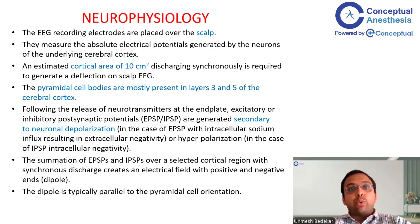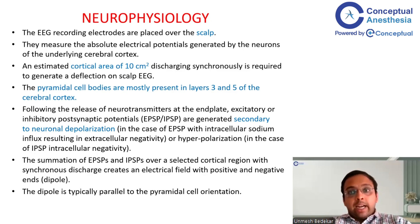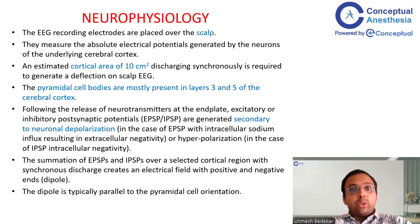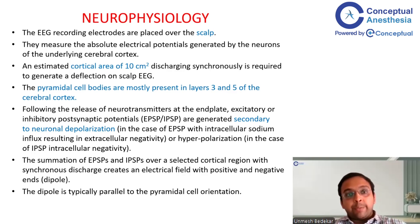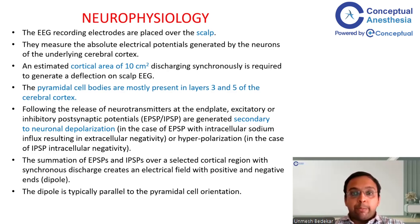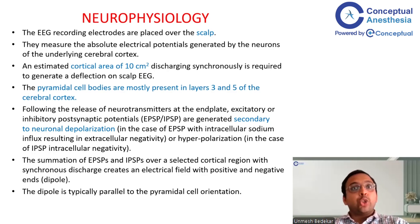In excitatory post-synaptic potentials, intracellular sodium influx results in extracellular negativity; in IPSP, hyperpolarization causes intracellular negativity. The summation of excitatory and inhibitory post-synaptic potentials over selected cortical regions — above which specific electrodes are placed — with synchronous discharge creates an electric field with positive and negative ends, known as the dipole. This dipole is parallel to pyramidal cell orientation of the cortex, and EEG measures this summation.